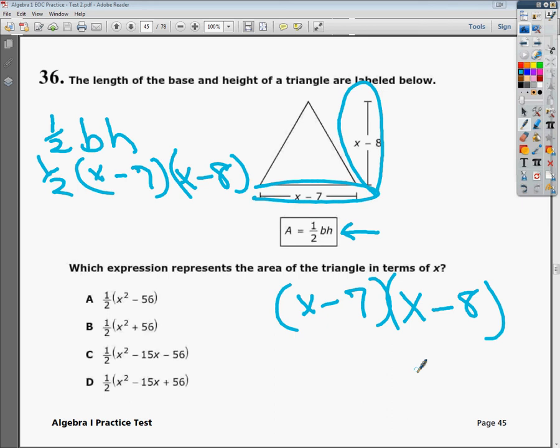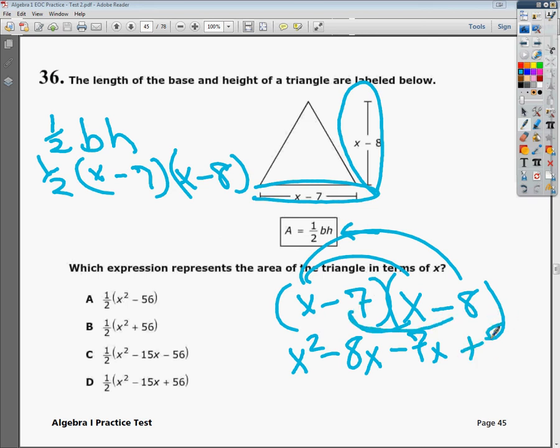So I'm going to do x times x, which is of course x squared. Then I'm going to do x times negative 8, and I'm going to get negative 8x. Then I do negative 7 times x, and I get minus 7x. And then I do negative 7 times negative 8, and I get plus 56.